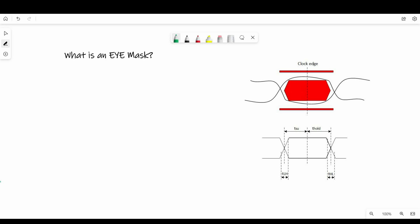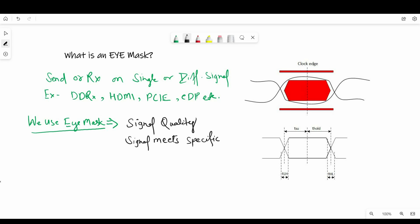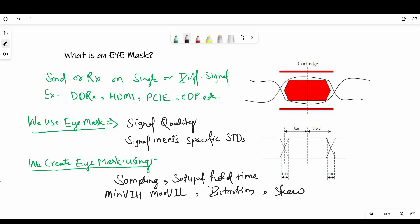There are so many signaling schemes and interfaces we use to send or receive data either on single ended or differential signals, for example DDR, HDMI, PCI, EDP, etc. Now to evaluate signal quality or to confirm that signal meets specific standards, we use a method called eye mask. It can be either diamond shape, rectangular or hexagonal, which we can create using sampling time or setup and hold time, minimum input high voltage or maximum input low voltage, jitter or distortion, accepted skew parameters given on the manufacturer's document. And we apply this eye mask on eye diagram created using real world scenarios. Based on that we get to know the violations on eye pattern and we try to resolve those.